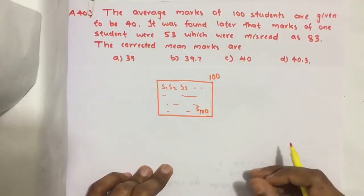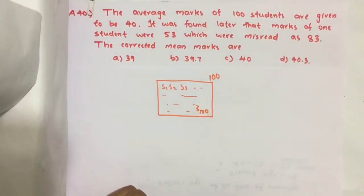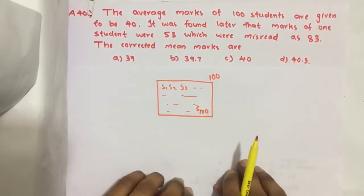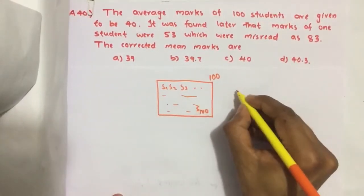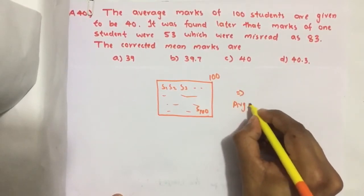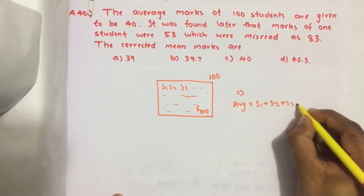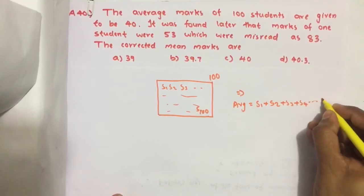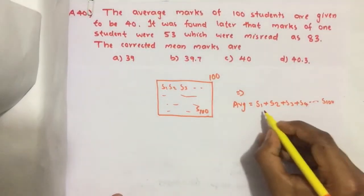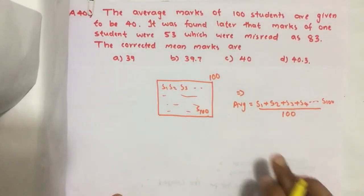100 students in a particular exam - each student got some particular marks, different marks. So we have to find the average. To find the average, what we do? We sum all the marks: S1, S2, S3, S4 like that to S100, and divided with the total number of students, that is 100. This is how we find the average.